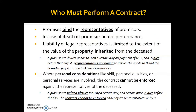Promises bind the representatives of promisors. The primary responsibility to perform a contract lies with the parties to the contract, but in case of death of the promisor before fulfilling the contract, the promisor's legal representatives — children, spouse, or any other legal representative — become responsible to perform that promise. However, the liability of legal representatives is limited only to the extent of the value of the property inherited from the deceased.